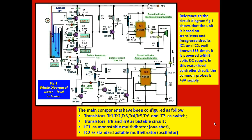Here, as you can see, this is the whole diagram of water level indicator. It is based mainly on transistors configured as a switch, and these two transistors TR8 and TR9 as bistable circuits, IC1 as monostable multivibrator, and IC2 as standard astable multivibrator. The whole circuit is powered with 9V DC.